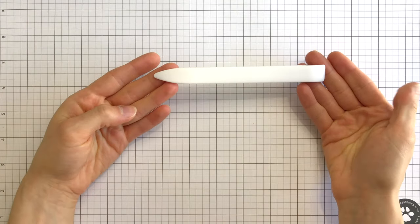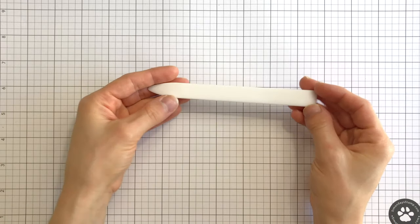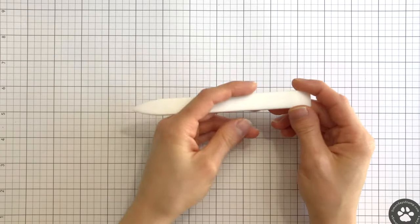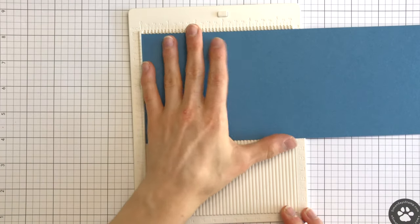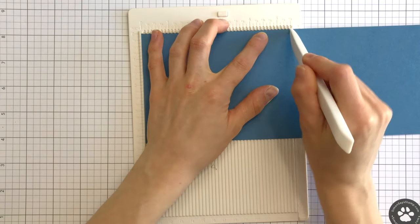Let's move on to our Simon's Teflon Bone Folder. A bone folder is important for so many reasons, and the right kind of bone folder makes all the difference. If you're scoring paper to fold, use the pointed end.